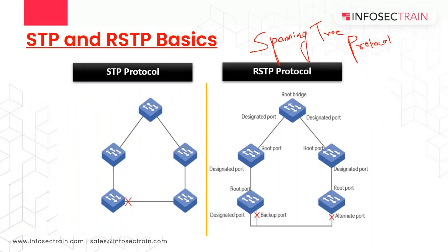STP prevents looping frames by adding an additional check on each interface before a switch uses it to send or receive user traffic. If the port is in STP/RSTP forwarding state in that VLAN, use it as normal. If it is in blocking state, block all user traffic — do not send or receive user traffic on that interface in that VLAN. These STP/RSTP states are separate from the interface connected/not-connected state and the access or trunk port operational state.